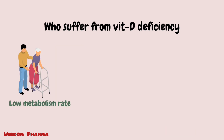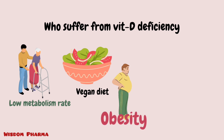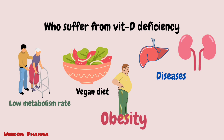Certain groups are at higher risk for vitamin D deficiency — for example, those with a high metabolism rate use more vitamin D. Patients with liver diseases or kidney diseases are also at greater risk for vitamin D deficiency, since these organs are essential for the metabolic conversion of vitamin D to its active form.